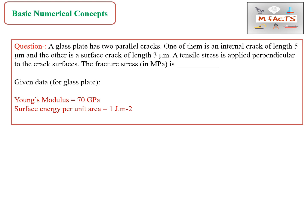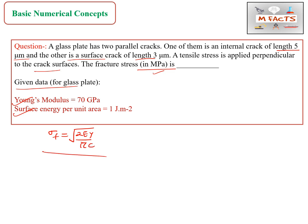The third type of question: a glass plate has two parallel cracks - one internal crack of length 5 micrometers and one surface crack of length 3 micrometers. A tensile stress is applied perpendicular to the crack surfaces. We need to find the fracture stress in megapascals. Young's modulus and surface energy are given. The formula is sigma F equals square root of (2E gamma divided by pi C).